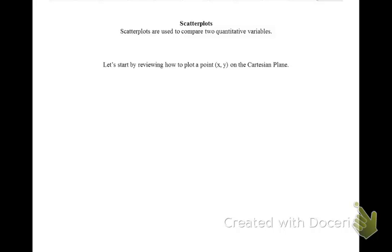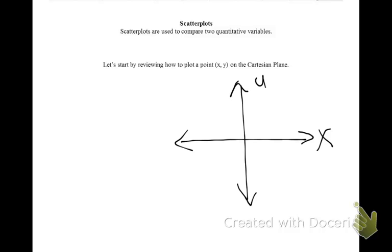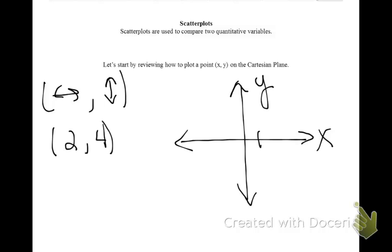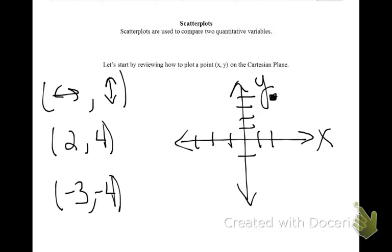Let's start by reviewing how to plot a point in the Cartesian plane. This is your x-axis and this is your y-axis. When you plot a point, you always want to move left to right and then up or down. For example, if I wanted to plot the point (2, 4), I would move two units in the x-direction and four units in the y-direction. Or if I wanted to plot the point (-3, -3), I would move three units in the negative x-direction and three units in the negative y-direction.